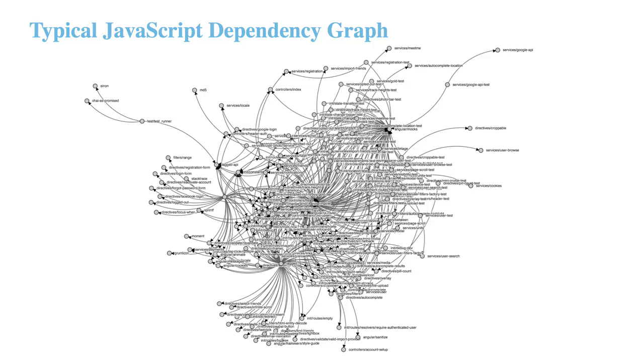If you've been working in JavaScript for a while, your dependency graph probably looks a little bit like this. It's probably hundreds of files, all interconnected and dependent on each other in their own ways. And let's see what kind of problems can happen if we don't manage this properly.